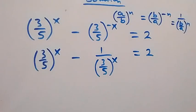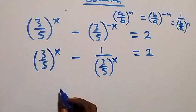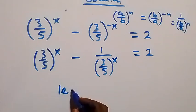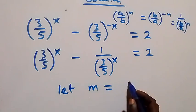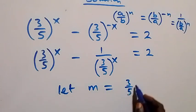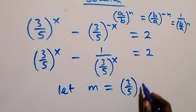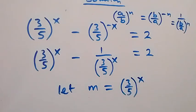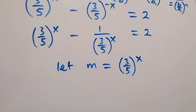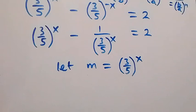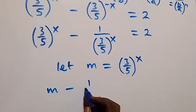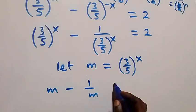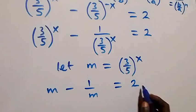Then we have (3/5) raised to power x — let's use a letter to represent that. So let m equal (3/5) raised to power x. Then this equation becomes m minus 1 over m equals to 2.